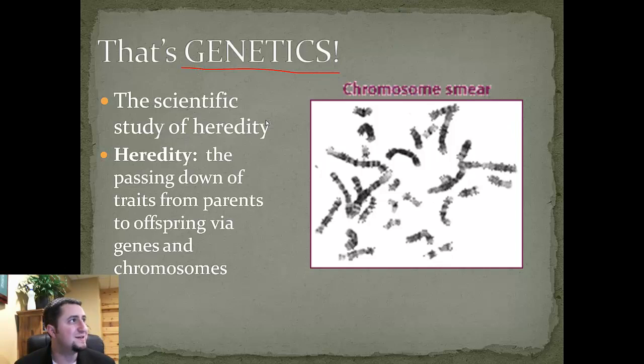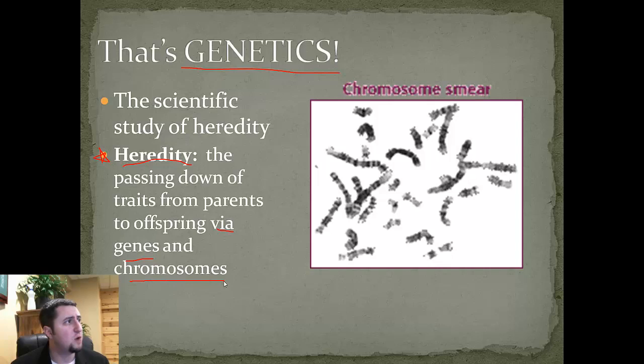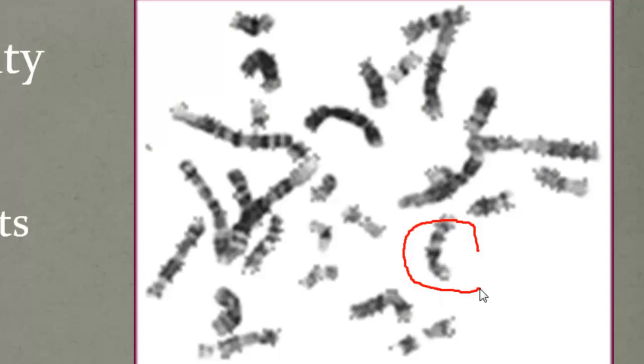Genetics is the scientific study of heredity. Heredity is a new vocab word — I'm going to put a star next to it. Heredity means the passing down of traits from parents to offspring via genes and chromosomes. This picture on the right, you may possibly recognize these things — those are chromosomes, and those chromosomes all contain DNA as we discussed in previous units.